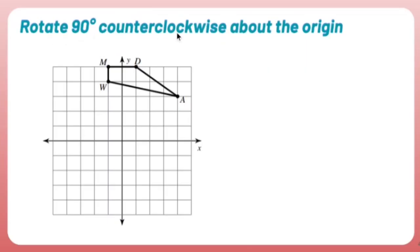Rotate 90 degrees counterclockwise about the origin. All right, so when we take a picture and we rotate it, we have to first care about our direction. Counterclockwise is the opposite of clock. Clock goes this way, so counterclockwise goes that way.